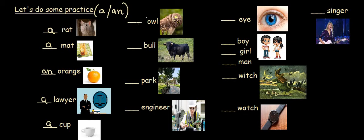Owl starts with the vowel o. Therefore, it's an owl. Bull starts with the consonant b. Therefore, it's a bull. Park starts with the consonant p. Therefore, it's a park.